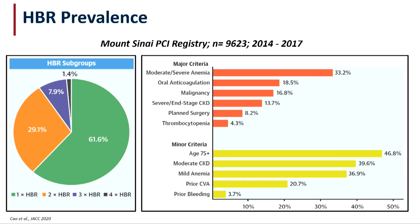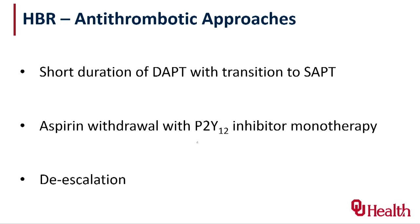Multiple registries have validated these criteria. Data from the Mount Sinai group shows the prevalence of high-bleeding risk in patients undergoing PCI is very high — well over two-thirds. Among major criteria, anemia is the most common; among minor criteria, age over 75. So we now have a definition, we know this is very common, and the challenge is how to treat these patients. There are three evolving antithrombotic strategies: short duration of DAPT followed by a single agent, aspirin withdrawal with continuation of a P2Y12 inhibitor, and de-escalation.